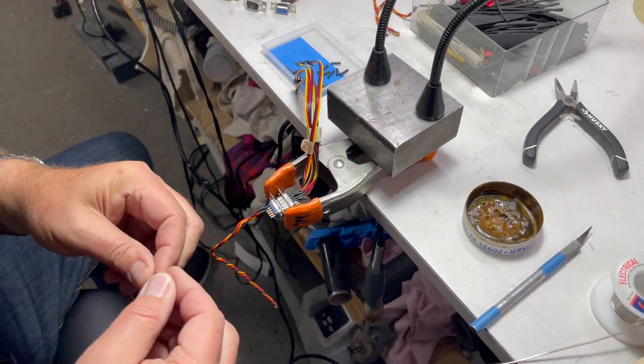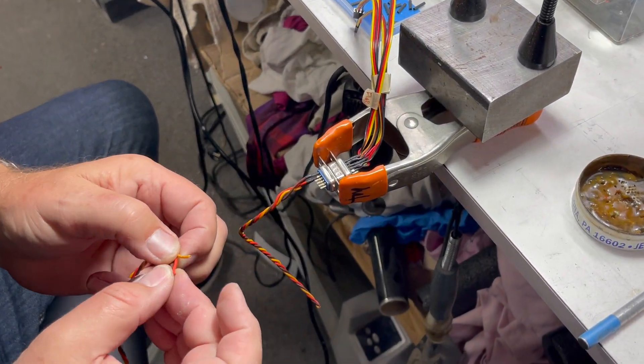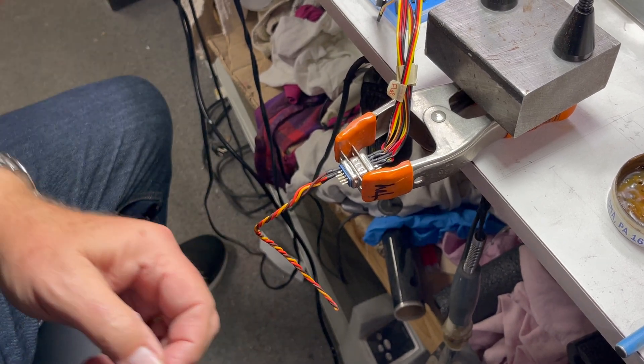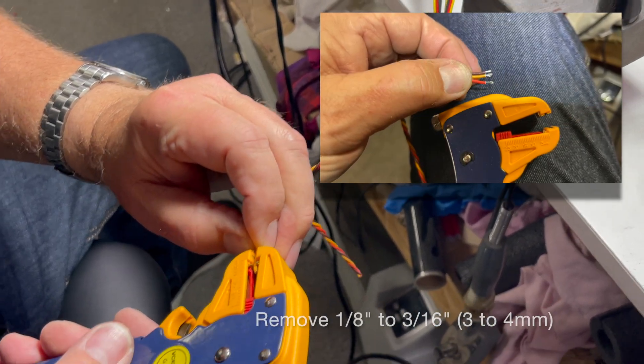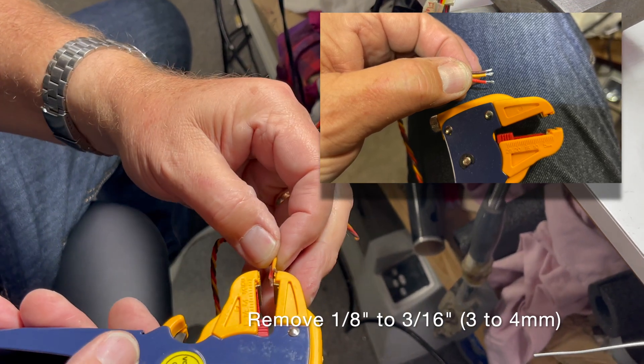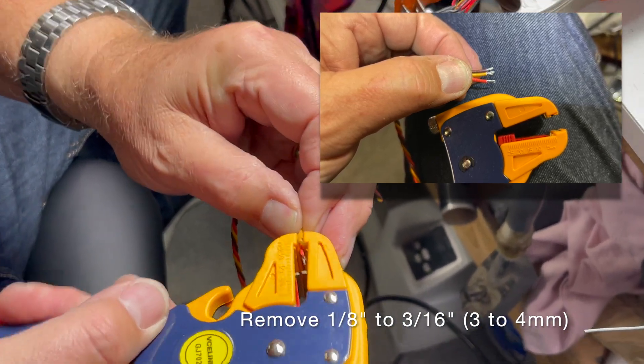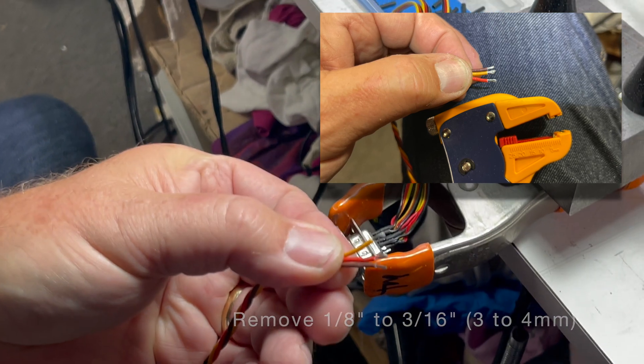So here what I start with is the wire and I use a wire stripper to basically take off about an eighth inch or three millimeters and here's kind of what we end up with.